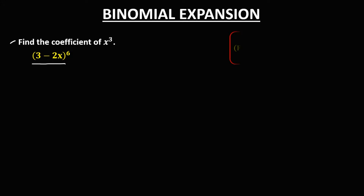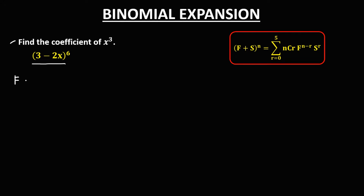Using the binomial expansion formula, in the given: the first term f is positive 3, the second term s is negative 2x, and n, the exponent outside, is 6.